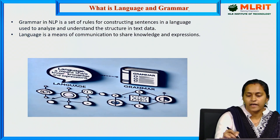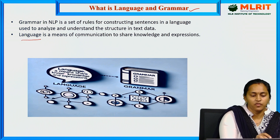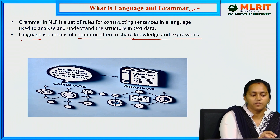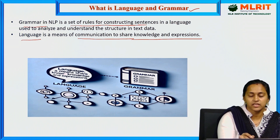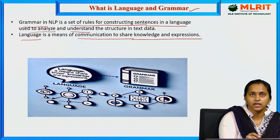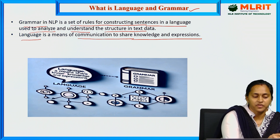What is language and grammar? Language is a means of communication to share knowledge and expressions. Grammar is a set of rules for constructing sentences in a language, used to analyze and understand the structure in text data.